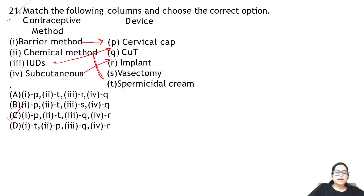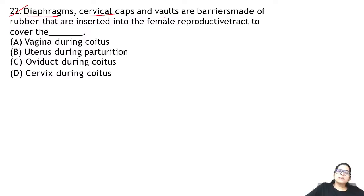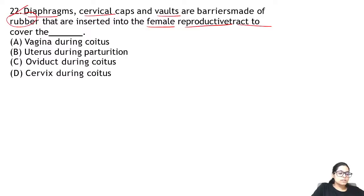Diaphragms and cervical caps are barriers that are inserted into the female reproductive tract and cover the cervix at the time of coitus.